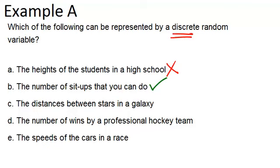Now the distances between stars in a galaxy, just like with part A, with the heights, there are an infinite number of distances. You couldn't list all the possible distances. So this variable is not discrete.